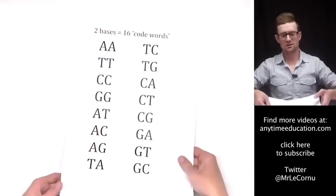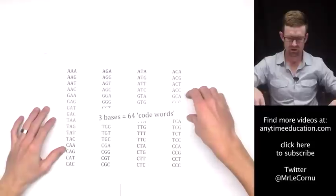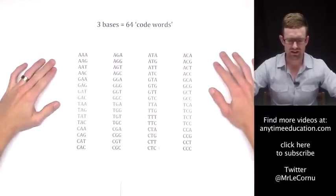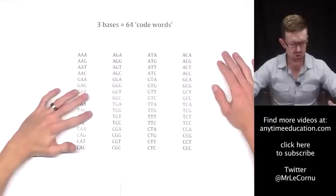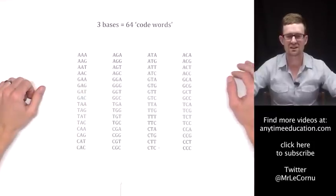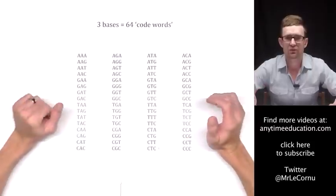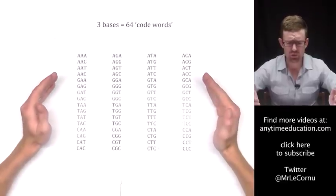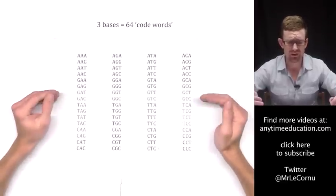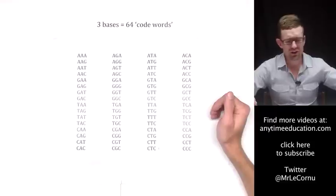Two bases long not going to give us enough code words. When the code words are three bases long, that gives us 64 combinations, which is well and truly enough to code for our 20 amino acids. So our code words in the genetic code are in fact three bases long, and we don't actually call them code words - we call them codons. That's the name for a group of three bases: DNA codons.